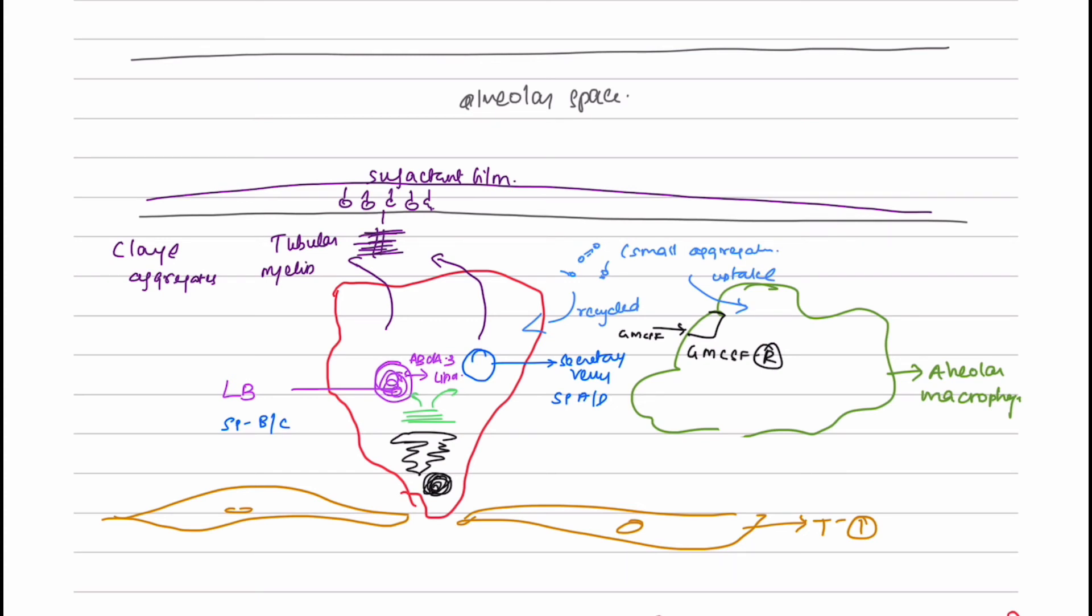The rest of the small aggregates are either recycled by the type 2 pneumocytes or taken up by the alveolar macrophages and undergo catabolism, with signaling from the granulocyte-monocyte colony-stimulating factor.